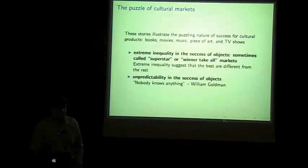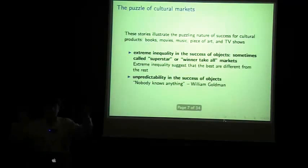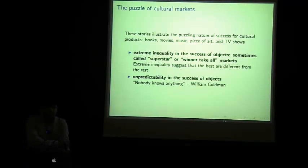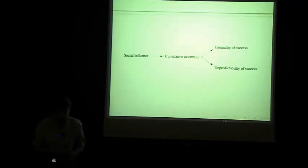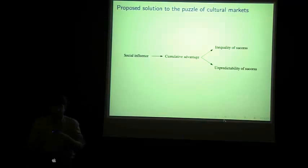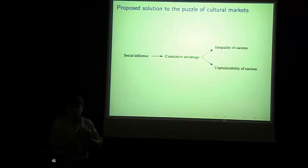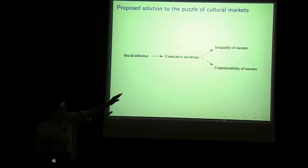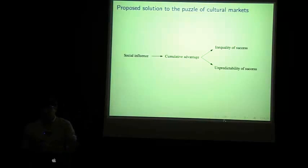Okay, so this is the puzzle that we want to explain. It seems strange that these two things would co-occur. That is, if there are these superstars, it seems like there wouldn't be a lot of unpredictability. So, this is the puzzle that we want to understand.